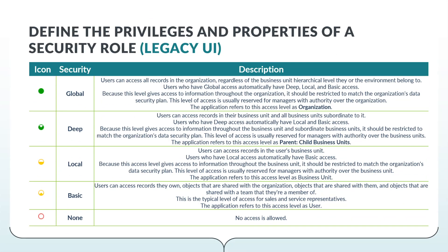The colored circles on the security role settings page identify the access level assigned to each privilege. Access levels determine how deep in the business unit hierarchy the user can perform the privilege. For Global access, also called Organization, it provides users with access to all records across the entire organization regardless of business unit hierarchy. This should be limited according to the organization's data security plan.